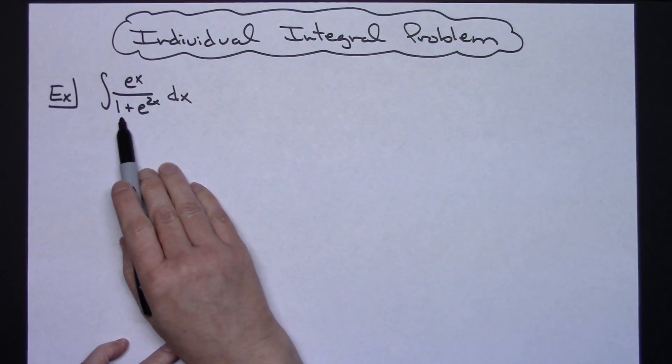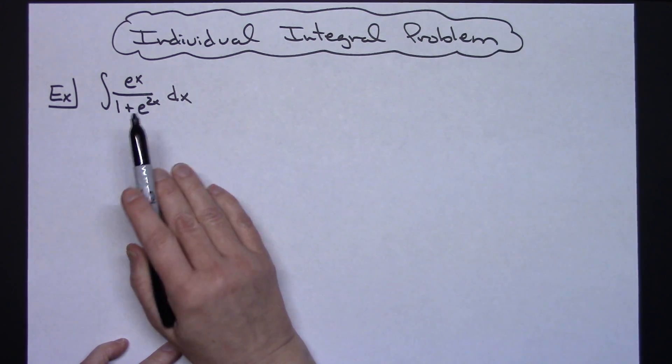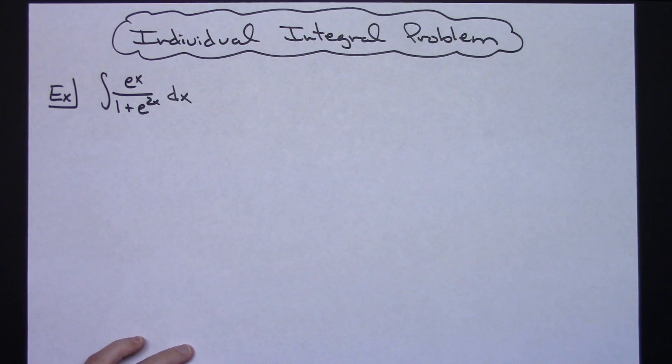Your first instinct might be to do a u substitution and allow that base to be u, but that leads to a very complicated problem and a lot of other substitutions that you would need to do.